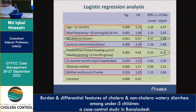Additional risk factors in the regression model: stool frequency more than 10 times in the last 24 hours is a risk factor. Absence of abdominal pain does not predict cholera — it may indicate another cause. Presence of some or severe dehydration had an odds ratio of 3.39, making it a risk factor. Predominant breastfeeding up to 6 months is a protective factor. The warmer season in Bangladesh — April to September — was associated with higher cholera incidence. Mother working outside the home is a risk factor; most of these mothers are low-paid daily laborers or garment workers.